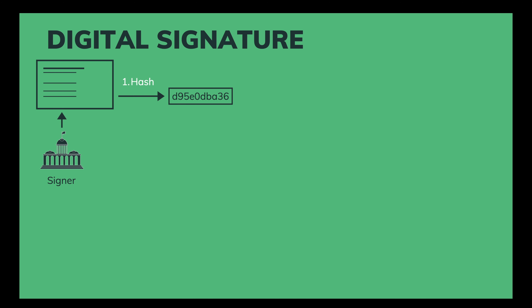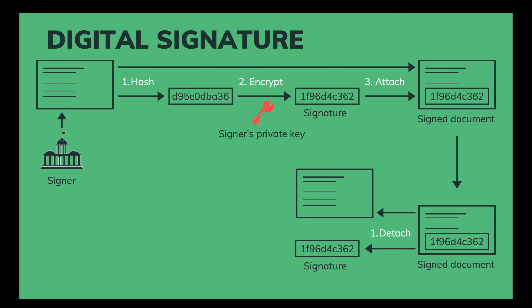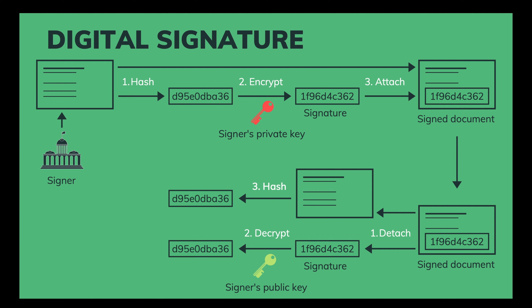We've talked a lot about digital signatures, so let's see how they really work. To sign a document, the signer first hashes it. Then the hash value is encrypted using the signer's private key. The result is the digital signature, which is then attached to the original document. Now how can we verify that the signature is valid? We just do the reverse process: first we detach the signature from the document, decrypt it with the signer's public key to get a hash value, then we hash the document with the same hash algorithm used in the signing process. If the two hash values are the same, the signature is valid.